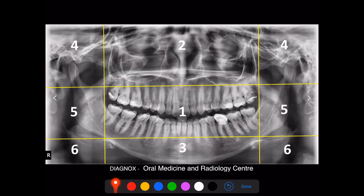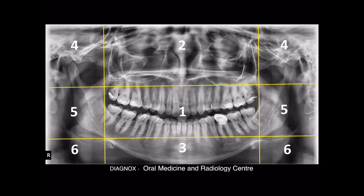This is how you separate the orthopantomogram into six zones and interpret in detail. When you do this, you will never tend to miss any findings. Once you interpret each and every zone, write down all the findings separately so that once you complete the interpretation of the entire radiograph, you will have all the data about the radiograph without missing any particular point. I hope you got an idea about interpreting an orthopantomogram after seeing this video. Thank you.